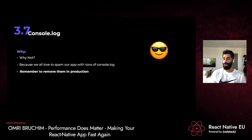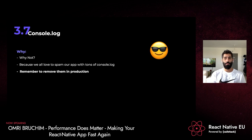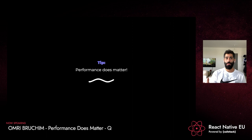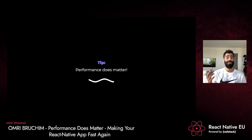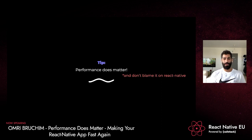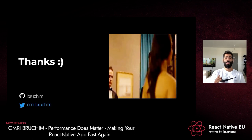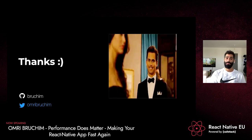One last thing: console.log. We all love to spam our console with lots of logs — it's super easy to understand what's happening in your code. Just remember to remove them in production because they can affect performance. So we've reached the end. I hope you got some interesting insights about improving your React Native application performance. Always remember that performance does matter — it affects your revenue. And don't blame it on React Native, because most of the time it's our fault. Thank you, and if you have any questions, send me a message on Twitter.